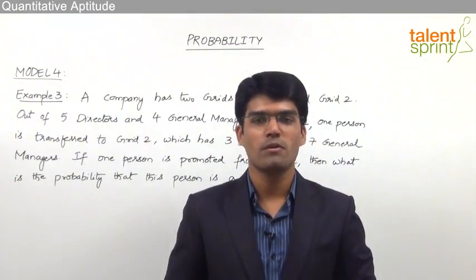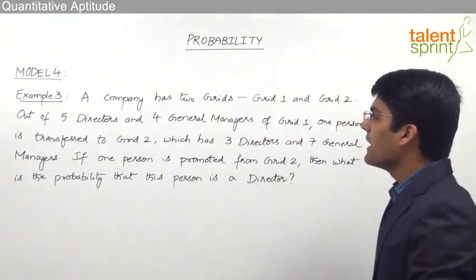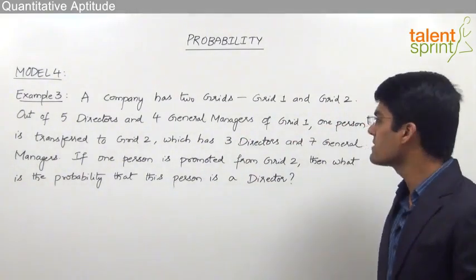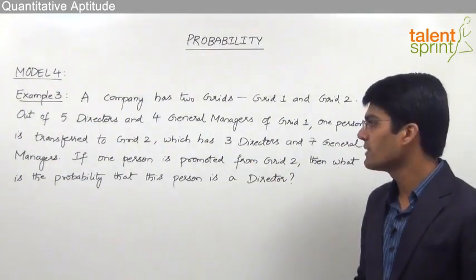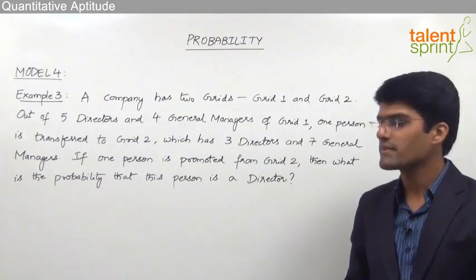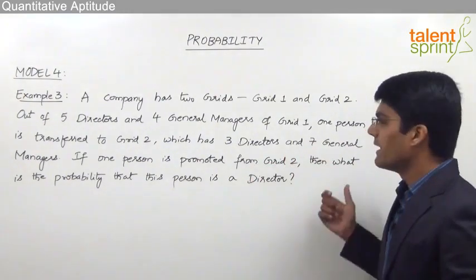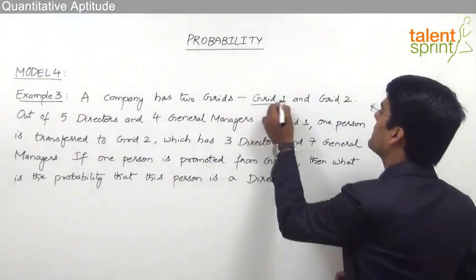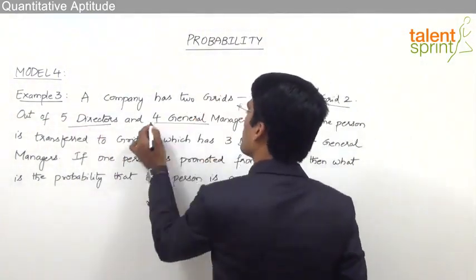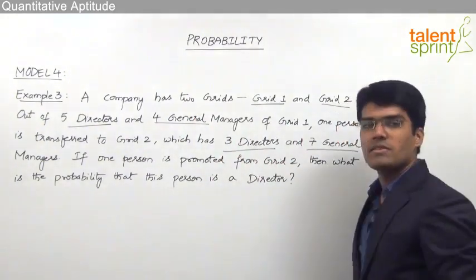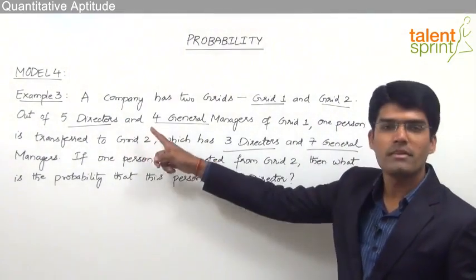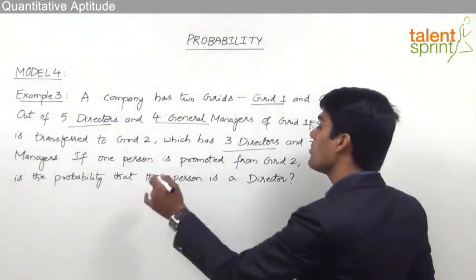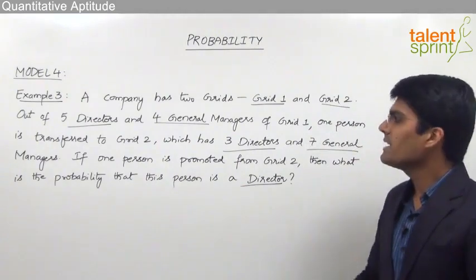Let us now take the third example from Model 4. A company has 2 grids, Grid 1 and Grid 2. Out of 5 directors and 4 general managers of Grid 1, one person is transferred to Grid 2, which has 3 directors and 7 general managers. If one person is promoted from Grid 2, what is the probability that this person is a director?